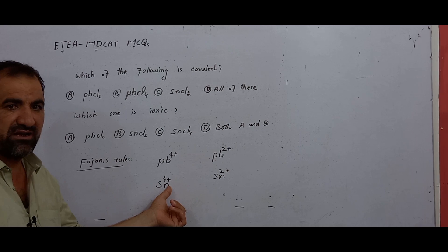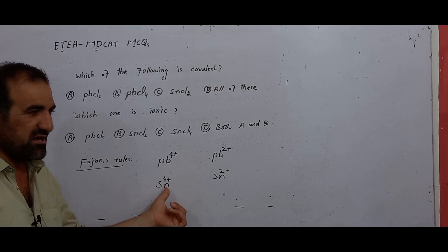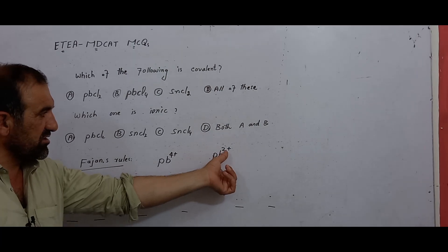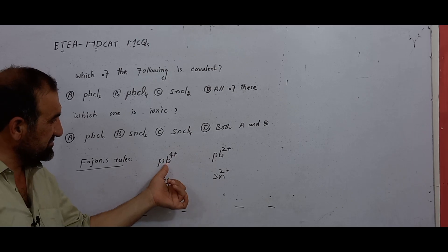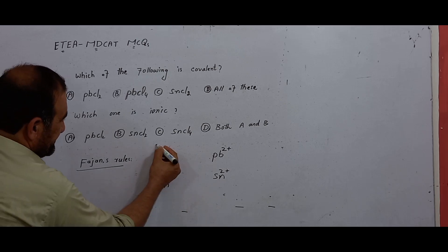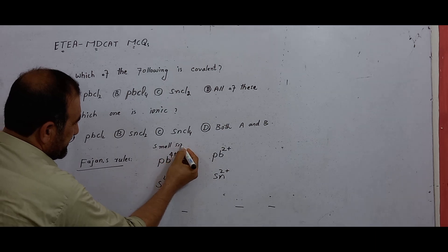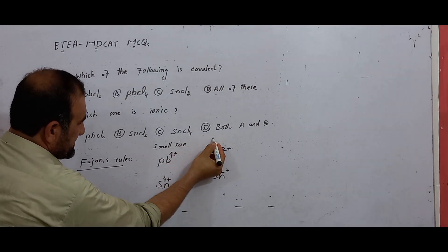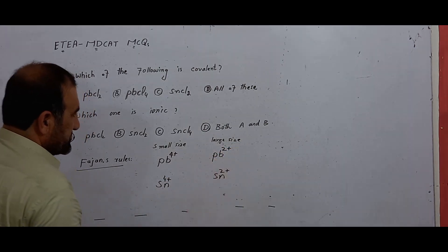The size of cations: the plus four cation has smaller size compared to the plus two cation which has larger size. Now comparing size and charge.